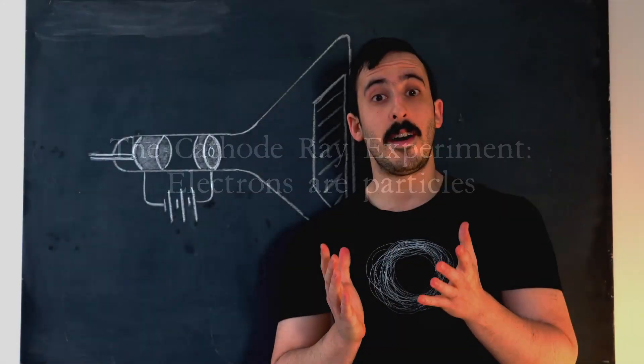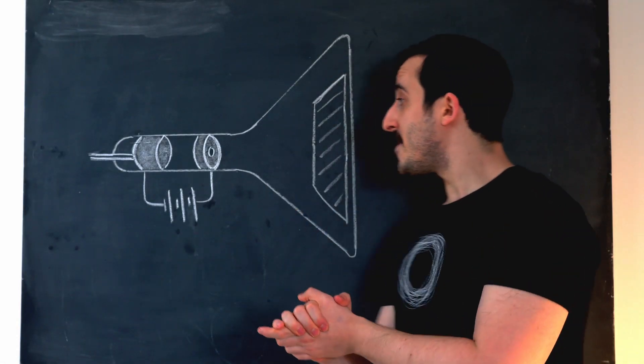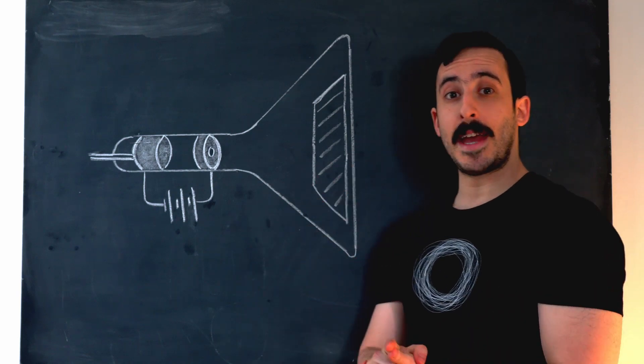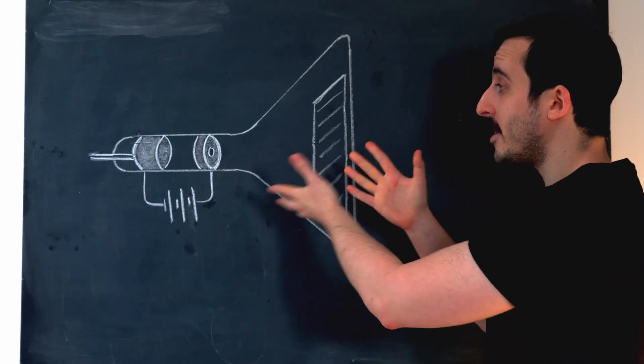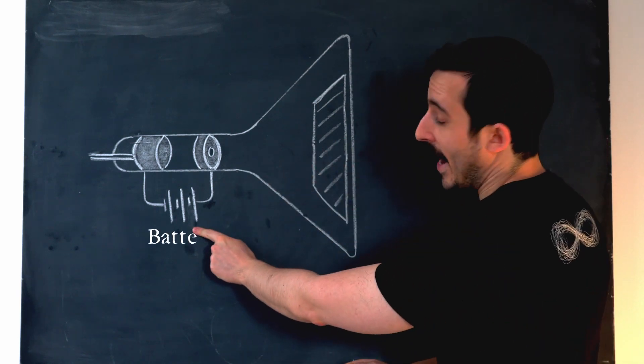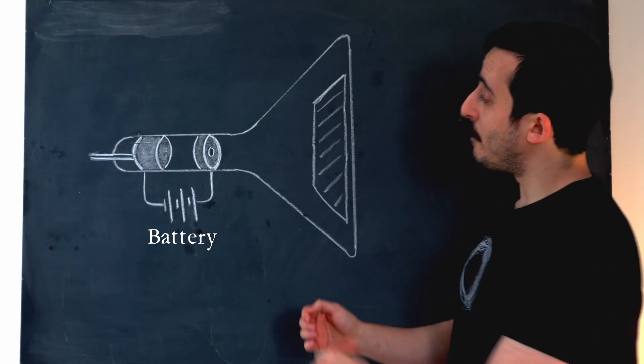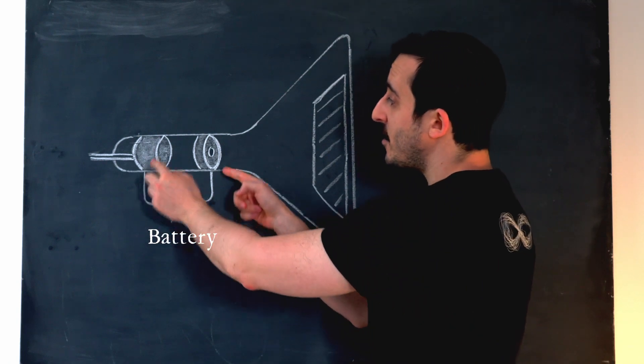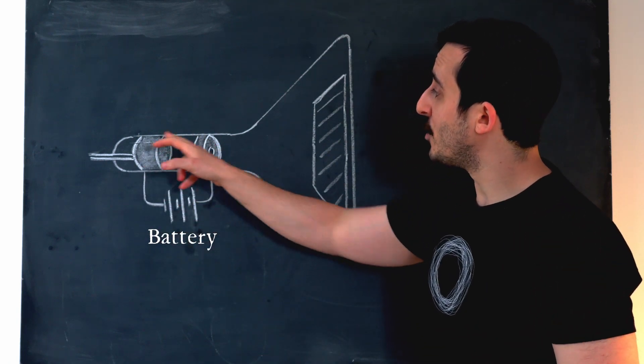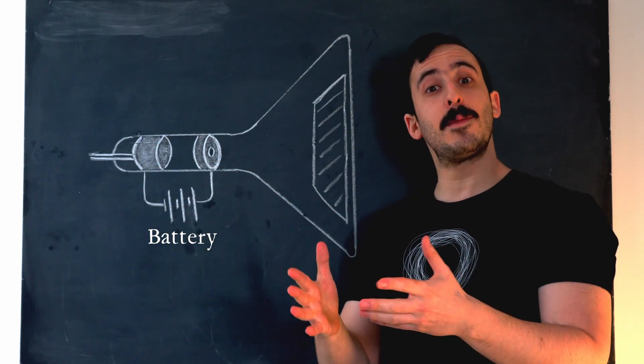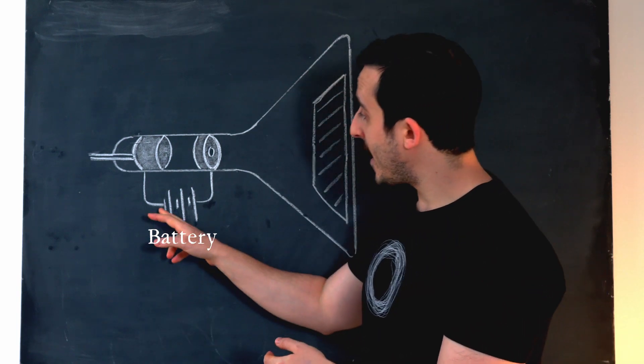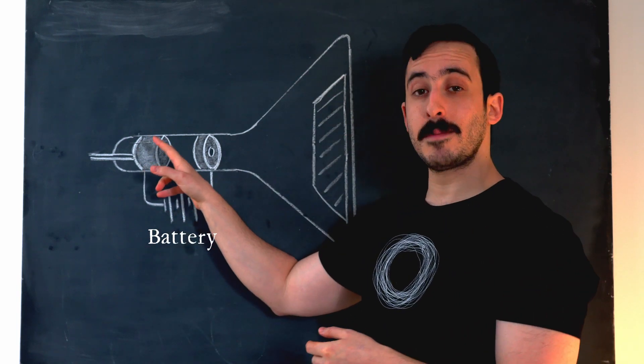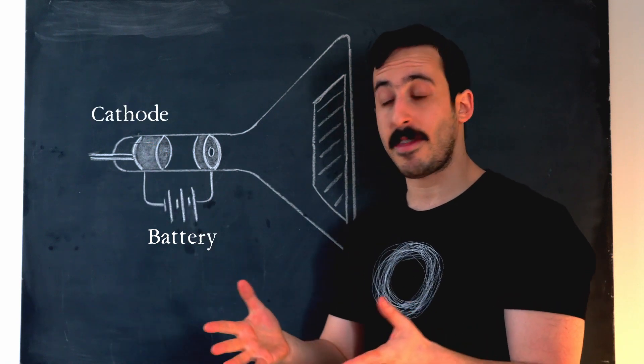So, onto our first experiment. And this experiment takes place in this apparatus, which we call a cathode ray tube. And this is what it's composed of. So over here, we have a battery, and then batteries have two ends, one positive and one negative. And we attach each of these ends to these metal plates, plates where electricity can flow freely. So the negative end, we connect to this plate that becomes negatively charged, we call that the cathode.